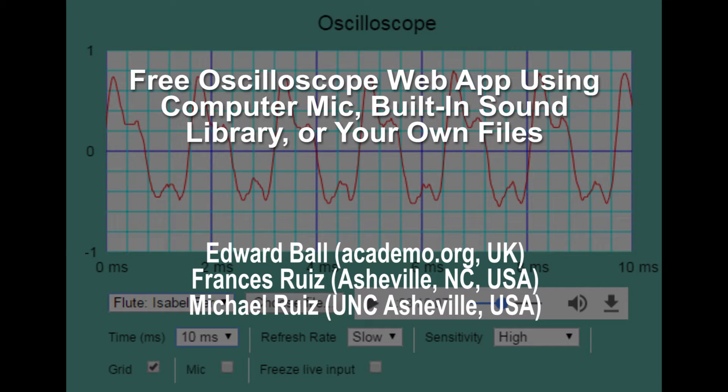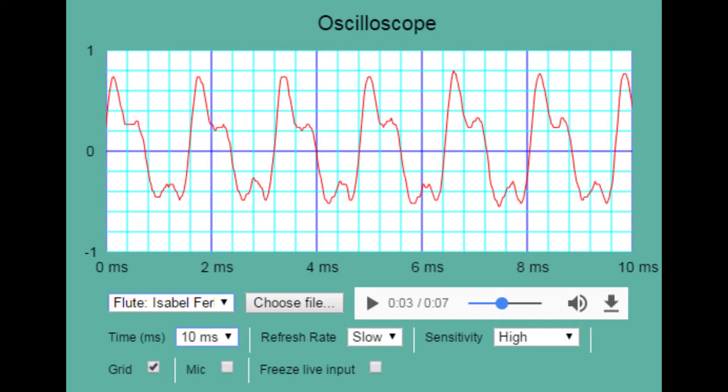We have developed a web oscilloscope that can be used in school or at home. The oscilloscope gives us a plot of amplitude versus time. You can measure the frequency of a periodic wave by first measuring the period.